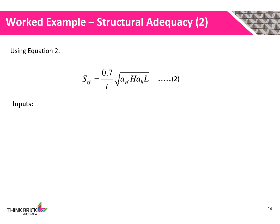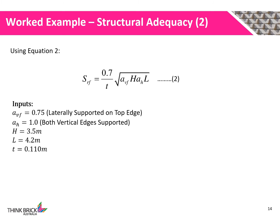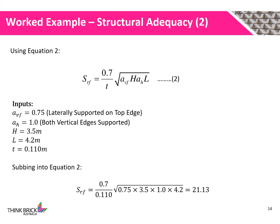Now evaluating equation 2. We know that the wall is laterally supported at the top edge, hence a vertical span coefficient of 0.75 is used. Both vertical edges are supported, so a horizontal span coefficient of 1 is used. The height of the wall is 3.5m, the length of the wall is 4.2m, and the thickness is 110mm. Summing this all into equation 2, we calculate a slenderness ratio of 21.13 for this wall.